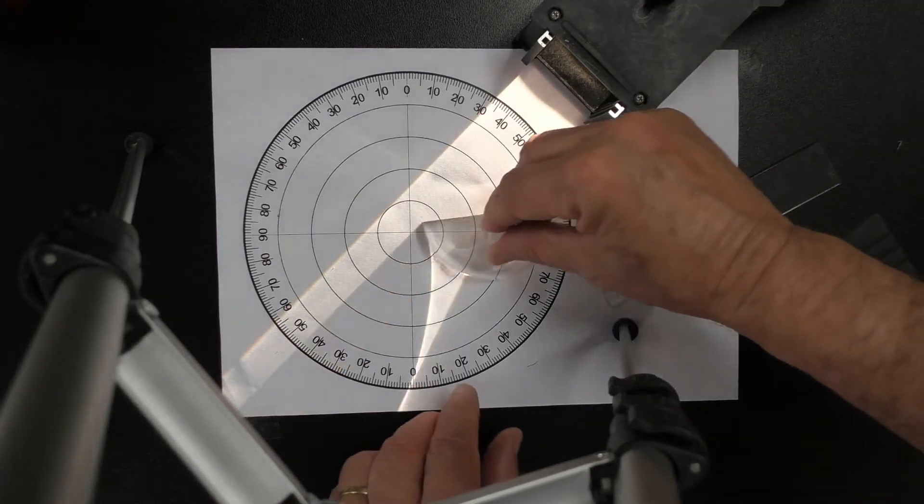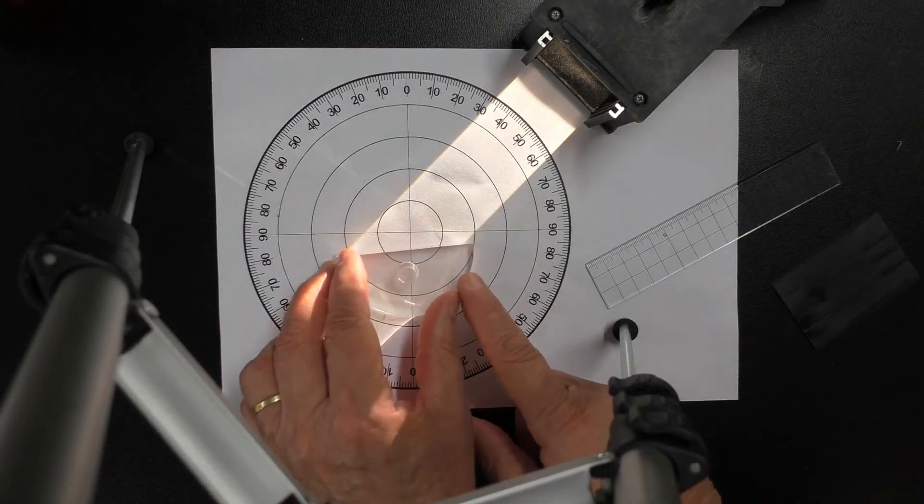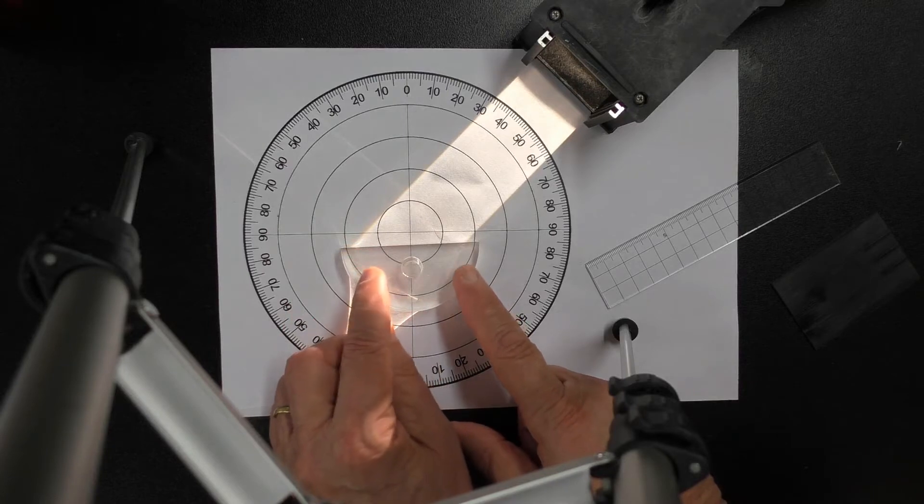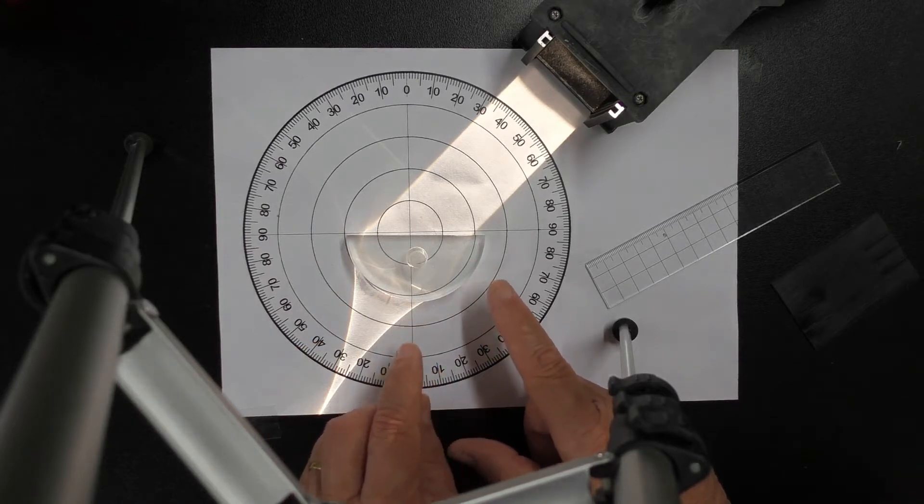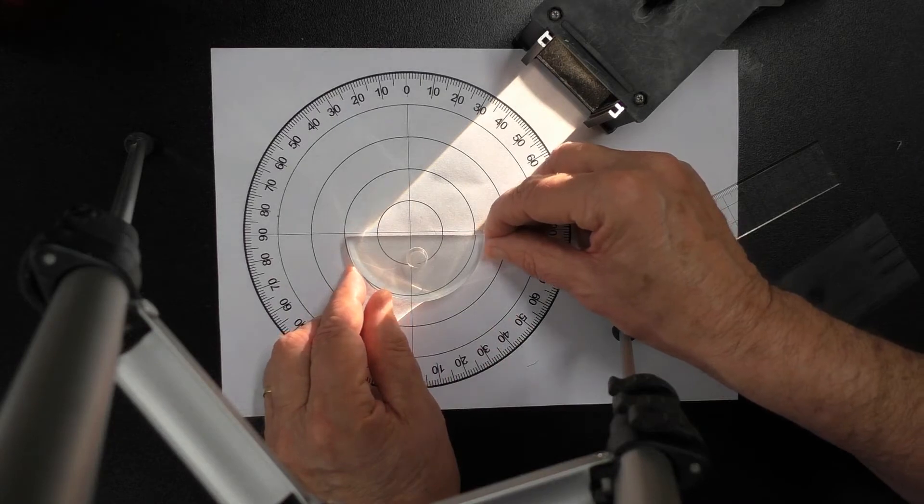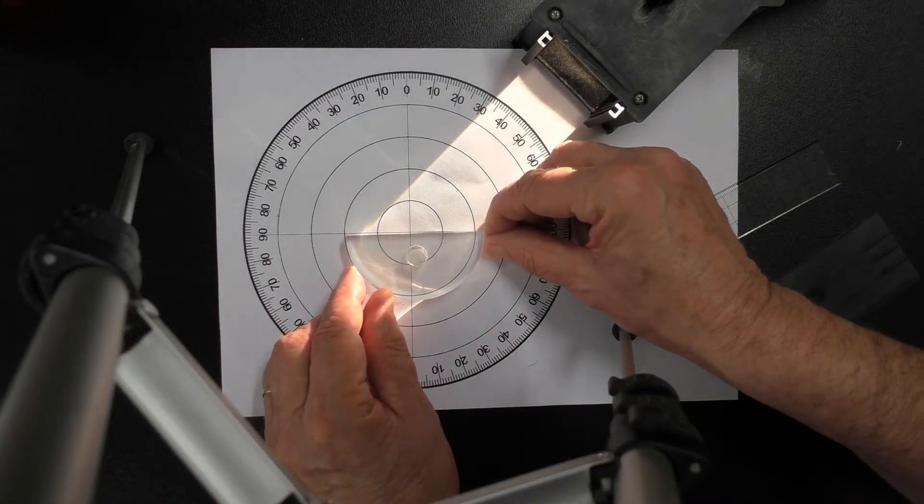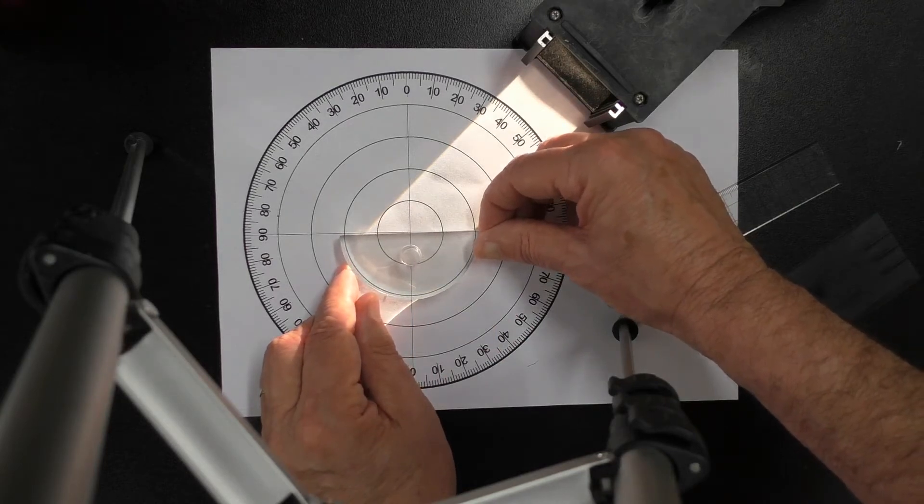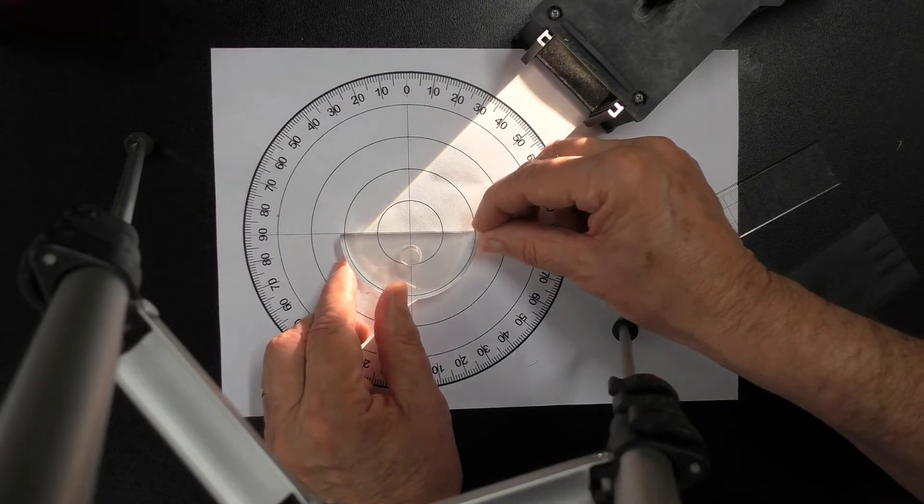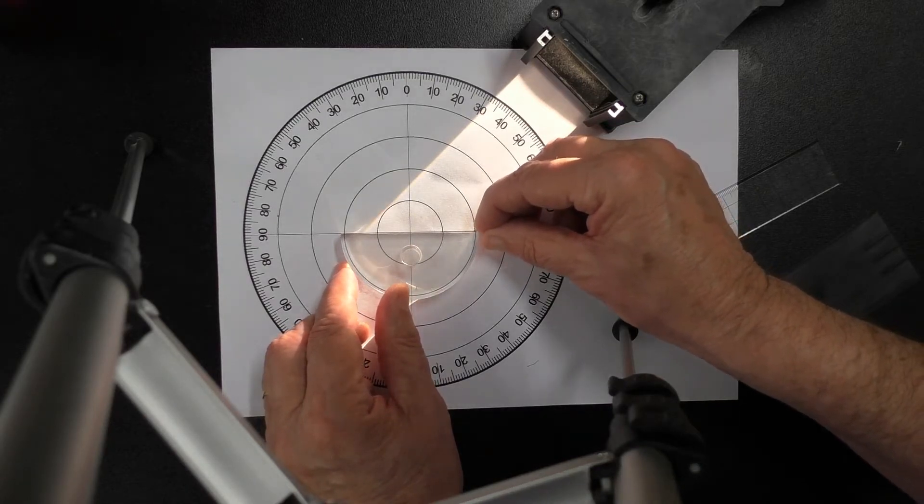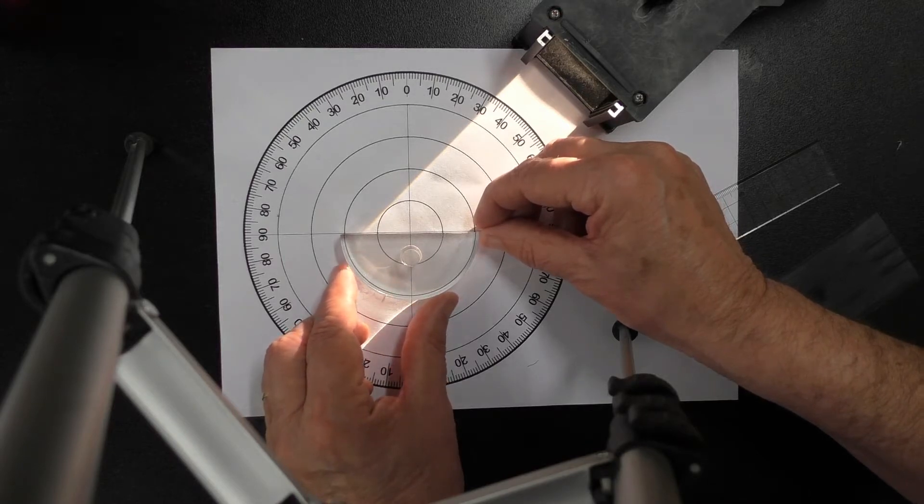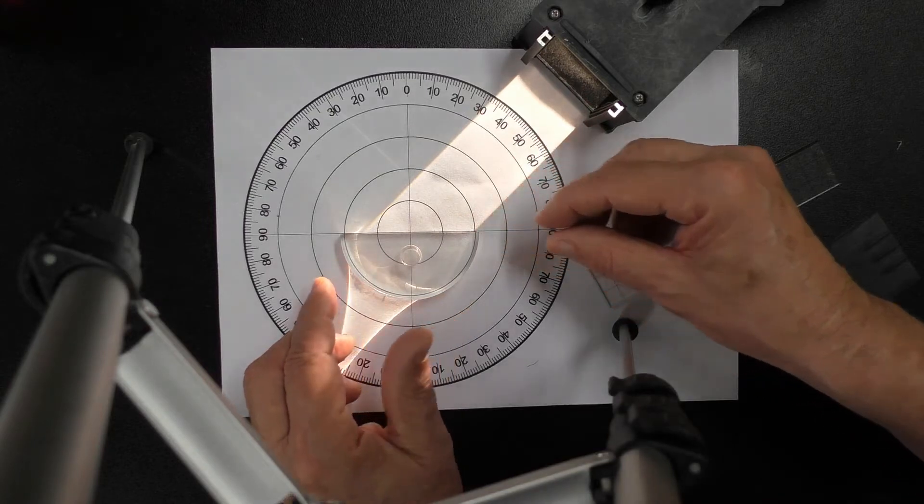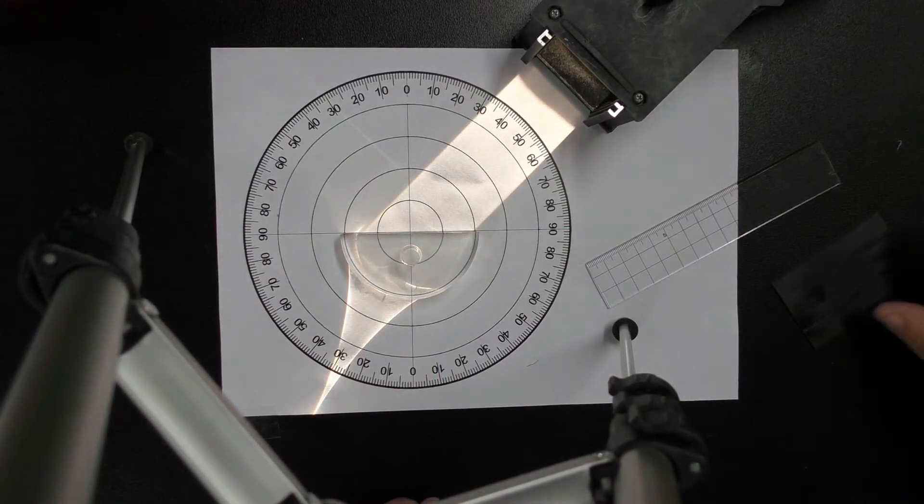Now the next step is to position the semicircular prism right on the center line here. I've got this positioned on a paper protractor and that protractor will help us measure the angles. So I'm going to carefully move this so that the line goes right down the center. This is quite important, you need to take a reasonable amount of time to get this right.